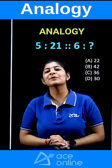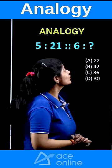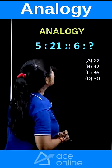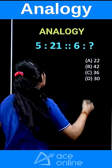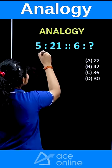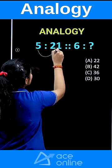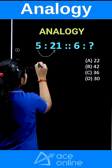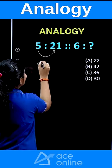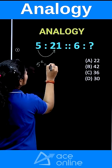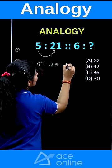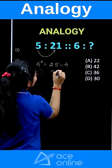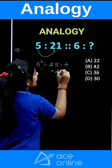Hello everyone, welcome to ACE online. Let's talk about this particular quotient from the concept of analogy. So 5 is somehow connected with 21. We can say that 5 squared is nothing but 25, and when I subtract 4 from it, I will get 21.